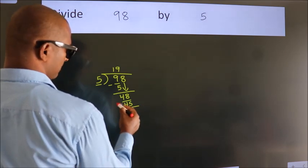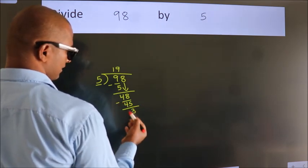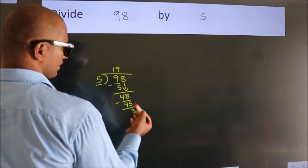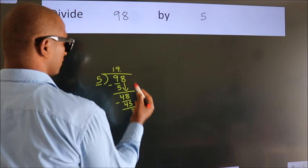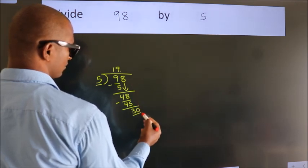Now we subtract and get 3. After this, there are no more numbers to bring down. So what we do is put a dot and take 0, making 30.